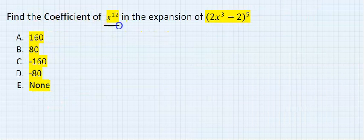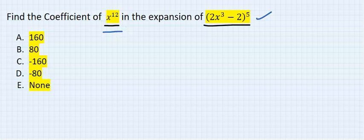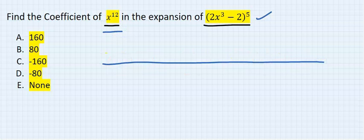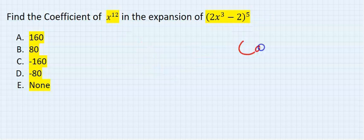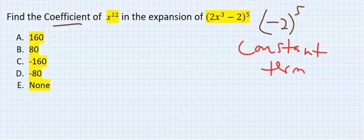Find the coefficient of x to the power of 12 in this expansion. What this means is: if I expand this bracket, I am going to have x to the power of 12 in a very long answer — then what is the number in front of x to the power of 12? Don't confuse this with the constant term that we did in the previous video. If this were finding the constant term, it could have been minus 2 to the power of 5, but this is finding coefficients — don't confuse the two.